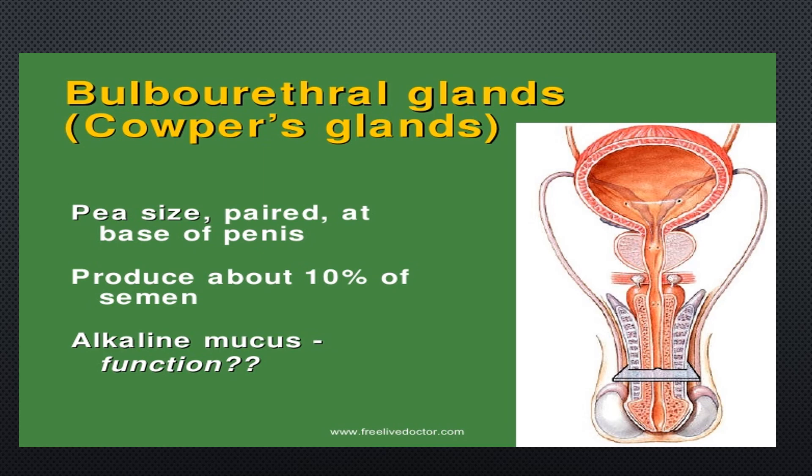A short duct from each bulbourethral gland enters the proximal end of the penile urethra. In response to sexual stimulation, the bulbourethral glands secrete an alkaline mucous-like fluid that prepares the urethra for sperm passage.